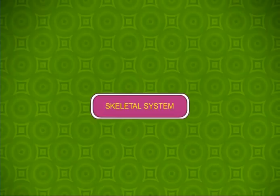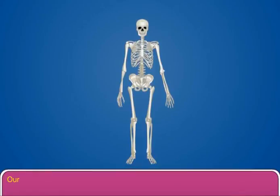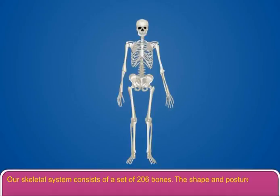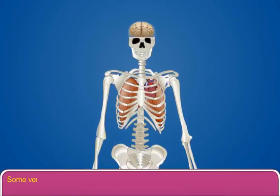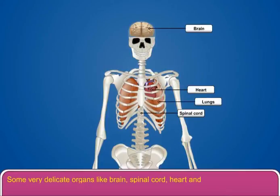Our skeletal system consists of a set of 206 bones. The shape and posture of our body is maintained by the bones. Some very delicate organs like the brain, spinal cord, heart, and lungs are protected by the bones.